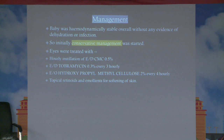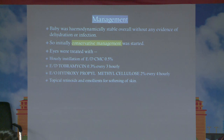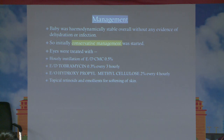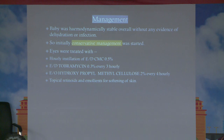Final diagnosis was congenital lamellar ichthyosis with bilateral congenital ectropion, exposure keratitis, eclabium of lips and underdeveloped ears. Since the baby was hemodynamically stable without dehydration or infection, conservative management was initially planned: CMC 0.5% eye drops hourly, tobramycin 0.3% every 3 hours, HPMC 2% every 4 hours, with topical retinoids and emollients for softening of skin in the hope for spontaneous correction.